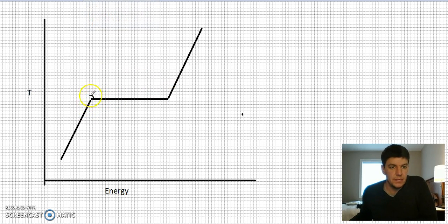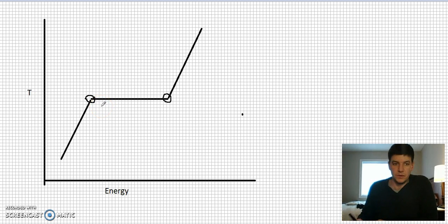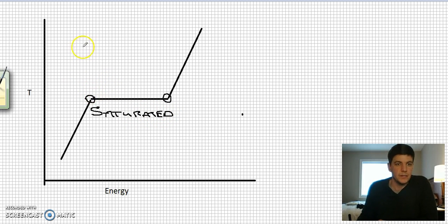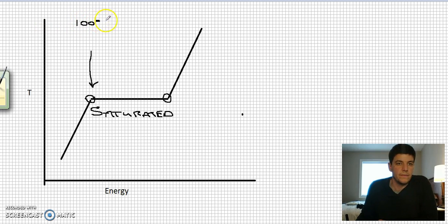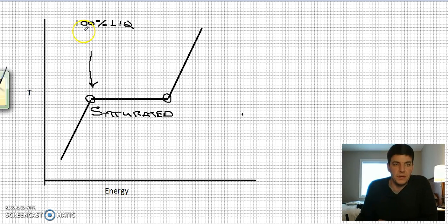We identified a couple of key points. In between them is what's known as the saturated region. Inside of here we have saturated steam. This point here — 100% liquid, saturated — is the saturated liquid section, and it has the identifier F, which stands for fluid. That's how I remember it.